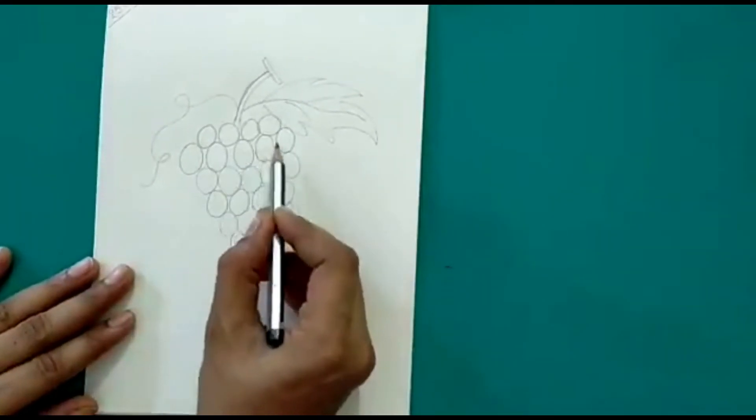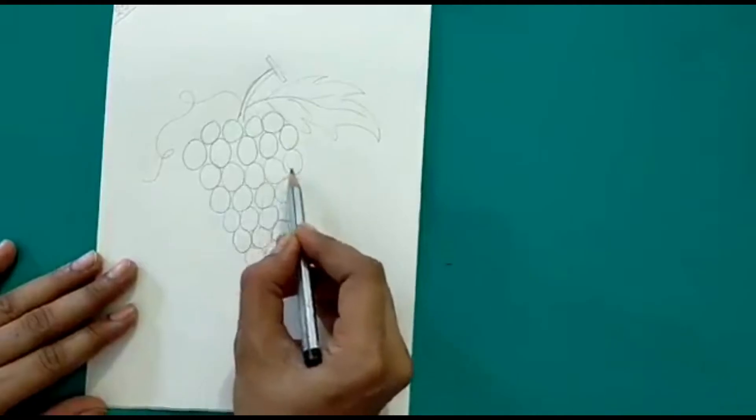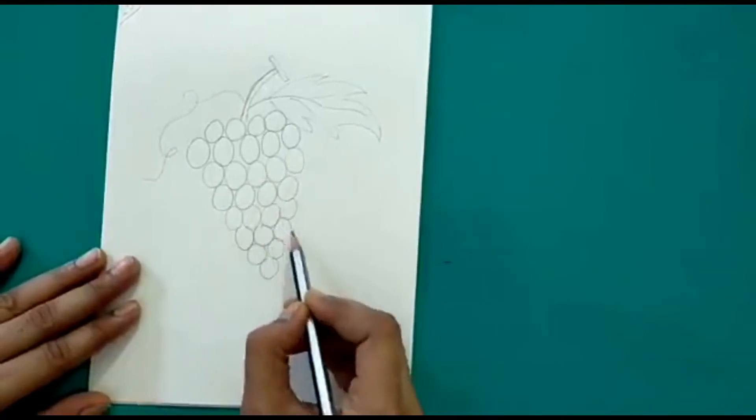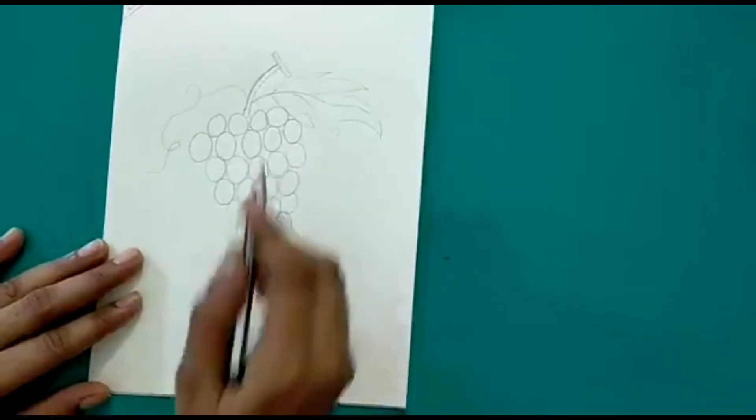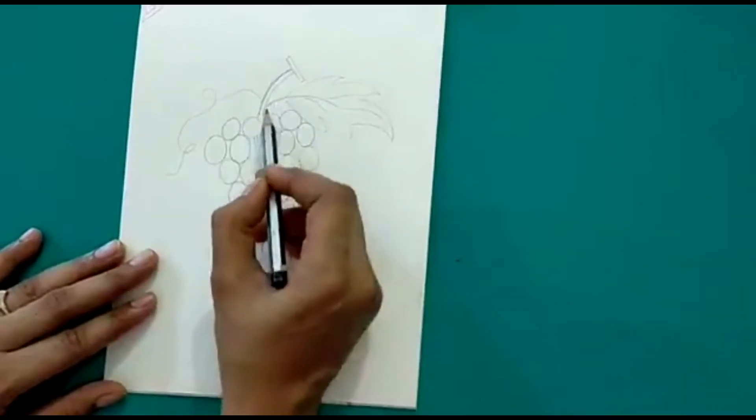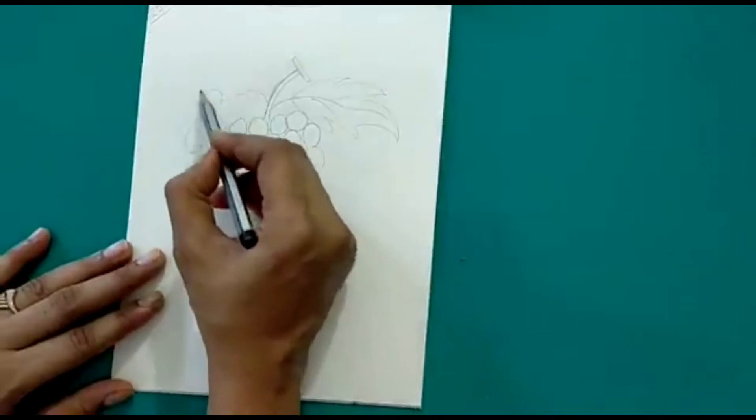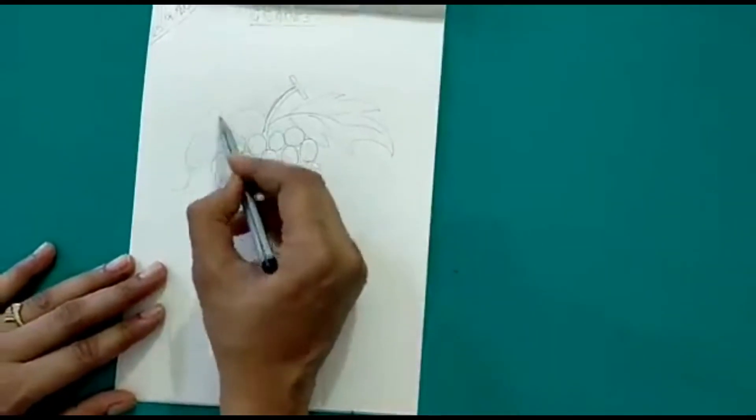First you can draw 5 ovals. Below that you can draw 4. Then 3, then 2. In the descending order you have to draw the grapes. Then make a stem and a leaf. And if you wish you can make a curve out here.